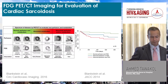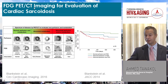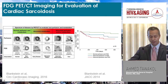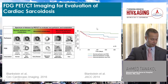We use that, for example, to look at cardiac sarcoidosis. Here are representative images for perfusion and FDG uptake showing where it's abnormal. Patients with abnormal FDG uptake have more events such as VT or death, while those with relatively normal uptake have good outcomes.